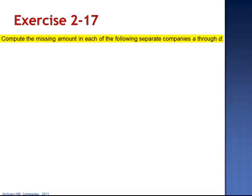Exercise 17 asks us to compute the missing amount in each of the following separate companies, A through D.